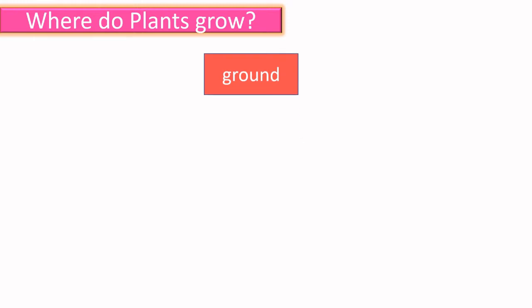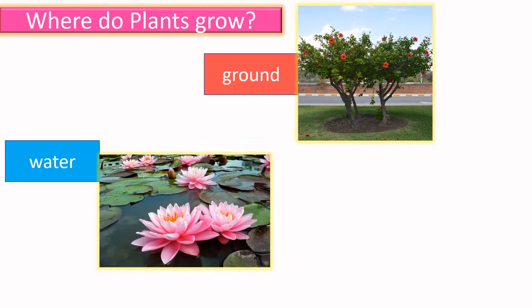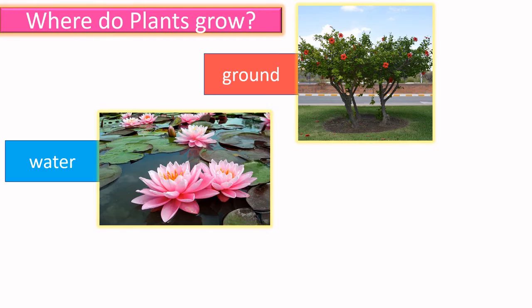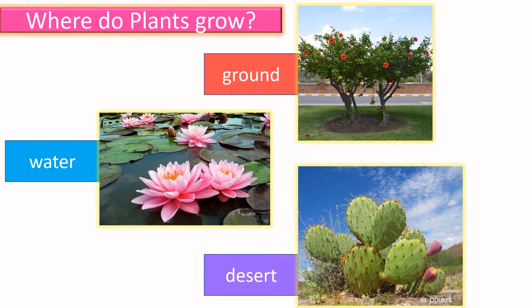Now let us see where plants grow. On the ground, for example, the hibiscus plant. In water, there is the lotus plant. And in desert areas, we can see the cactus plant.